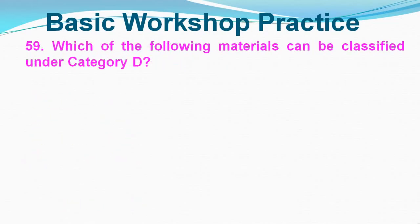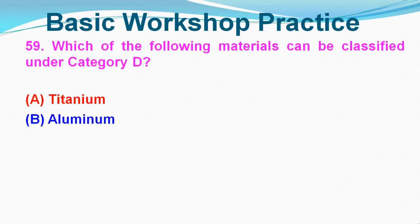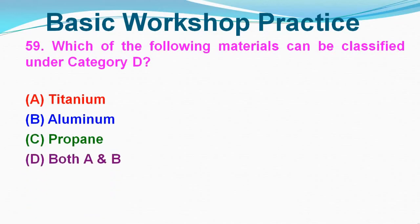Question No. 59: Which of the following materials can be classified under Category D? Option A: Titanium, Option B: Aluminium, Option C: Propane, Option D: Both A and B. Correct answer is Option D, Both A and B.